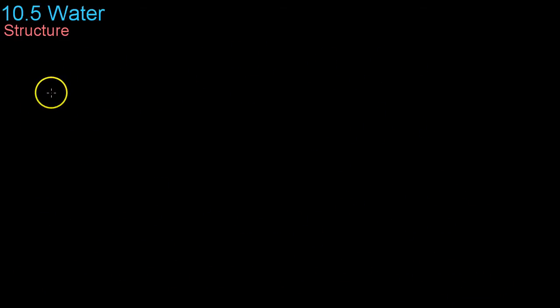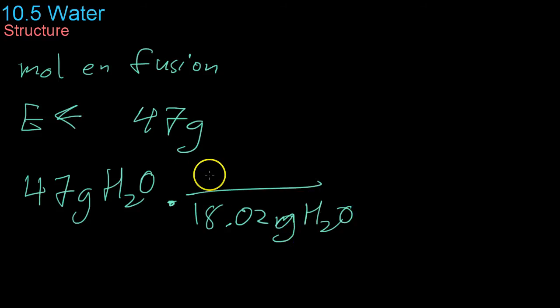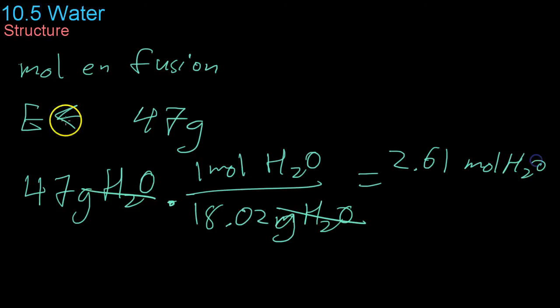To finish up here, we're going to do a sample problem of something which you might use the actual molar enthalpy of fusion for. For example, if you wanted to know how much energy is absorbed when 47 grams of ice melt. The first thing you would do is take 47 grams of water and find how many moles of water you have using the molar mass, like we did with our stoichiometry earlier, which happens to be 18.02 grams per mole. You cancel out the grams and end up with 2.61 moles of water.